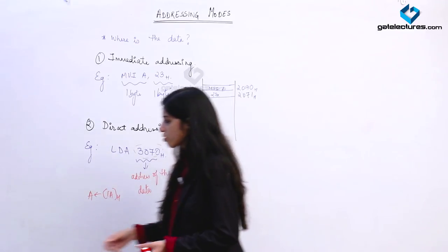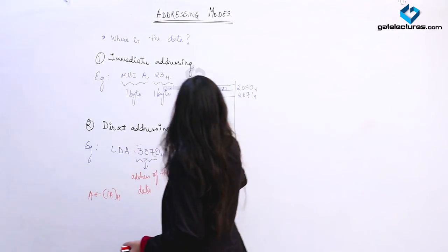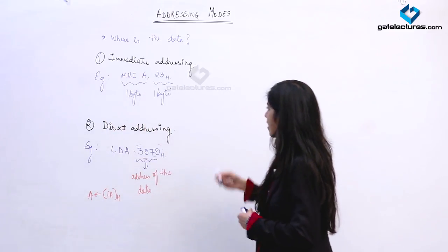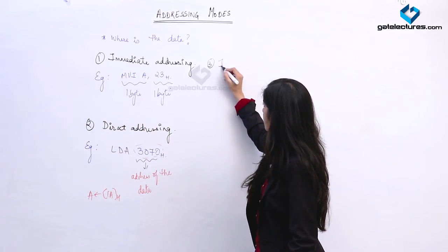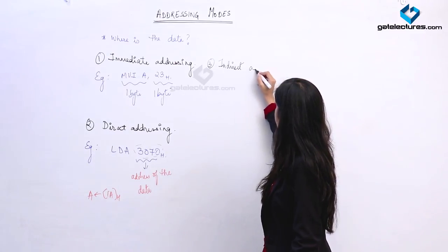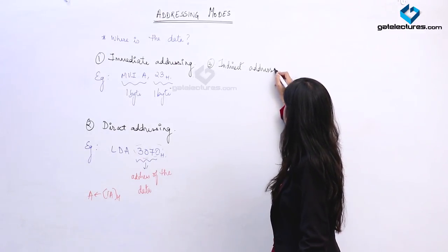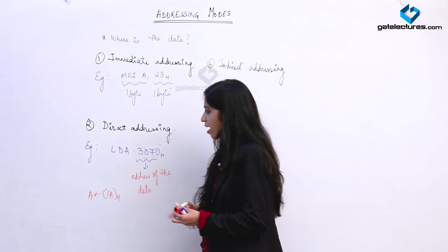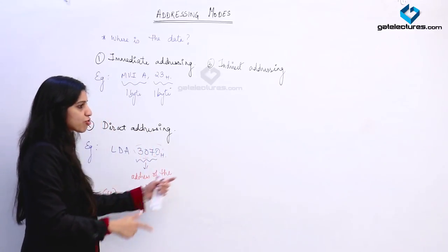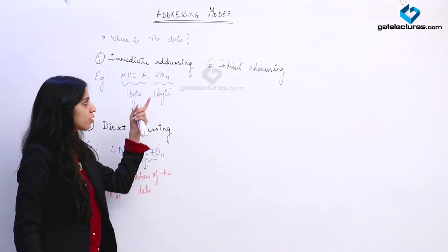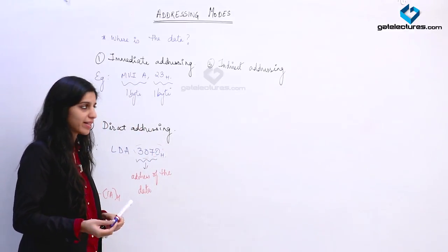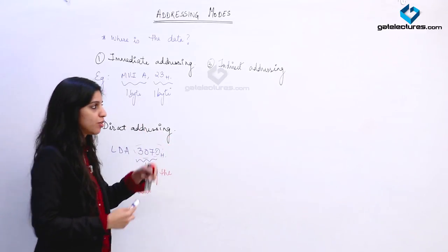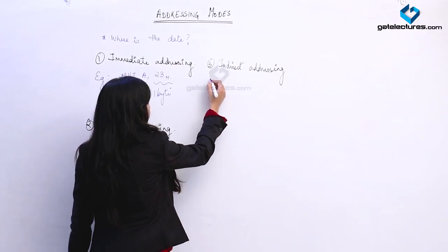The next addressing mode is going to be indirect addressing. What happens in indirect addressing is the data is not located in the immediate location, and we are not giving the memory location of the data directly. From some place, the memory location has to be identified.